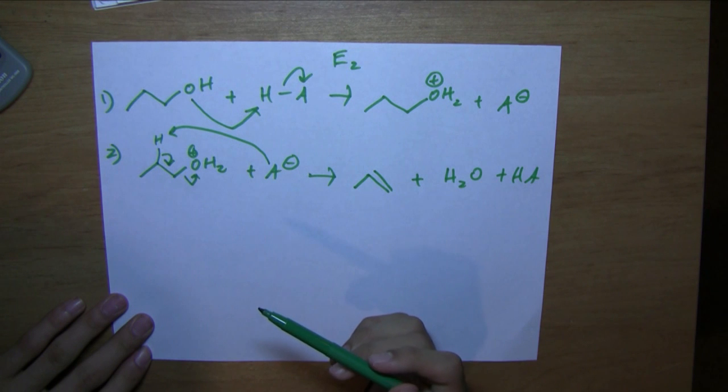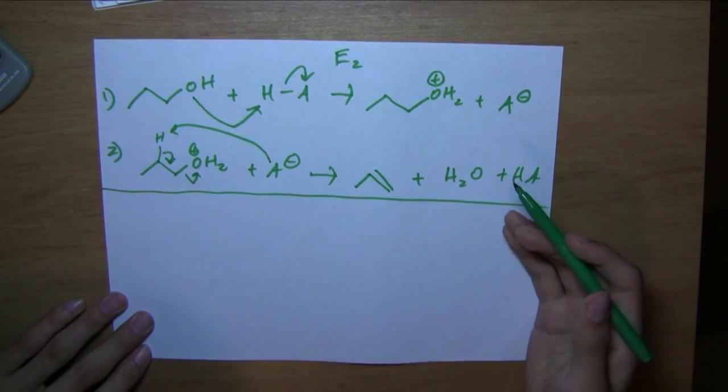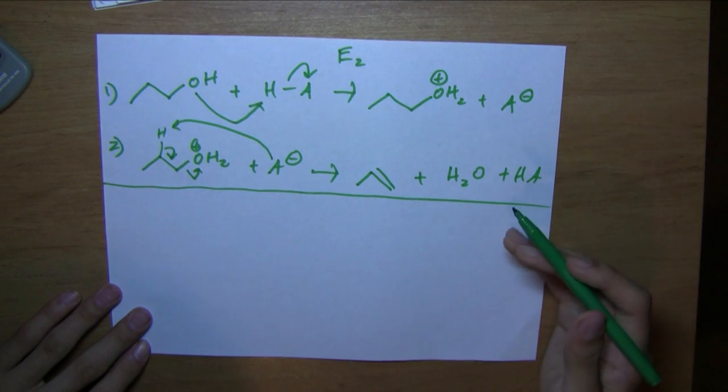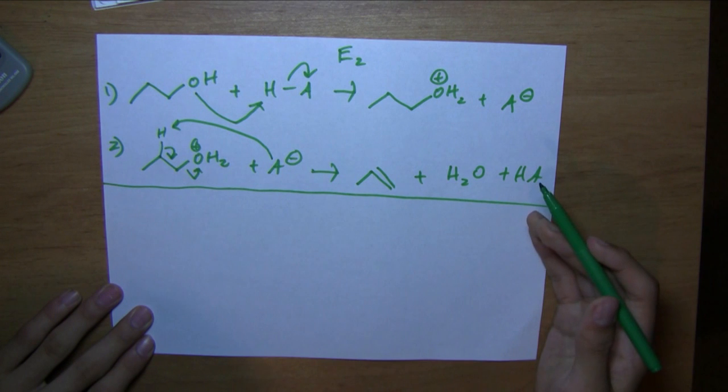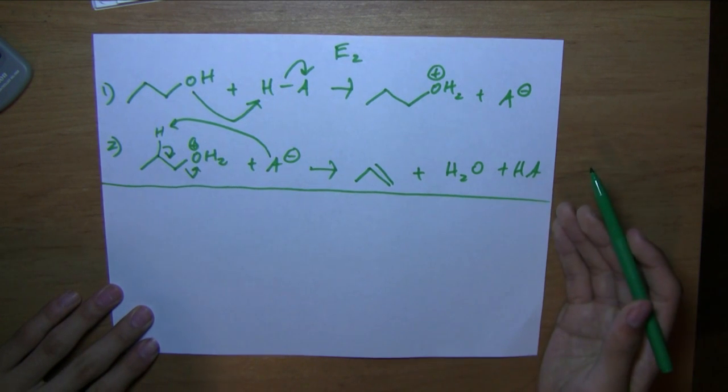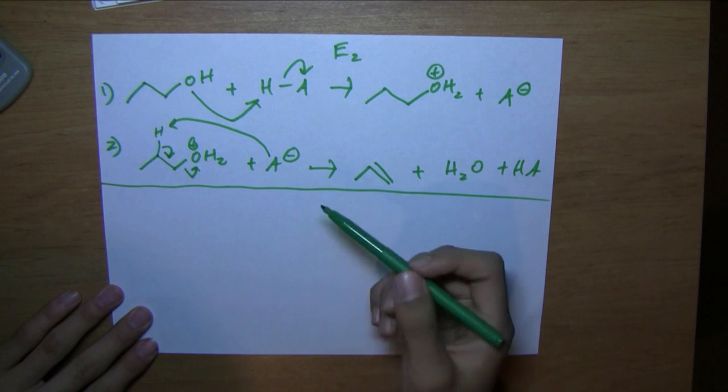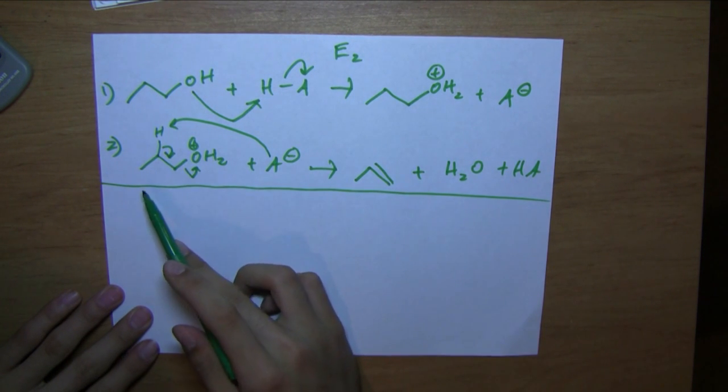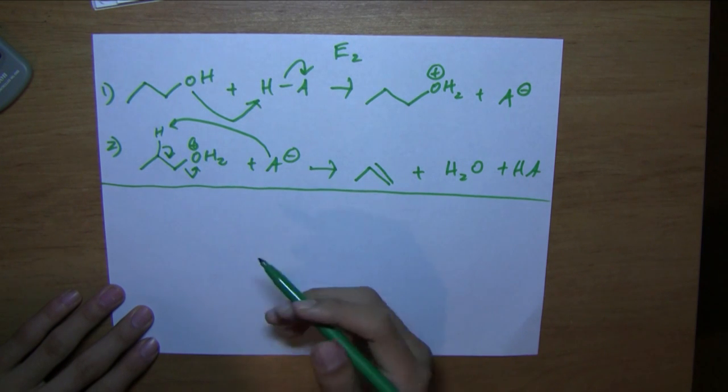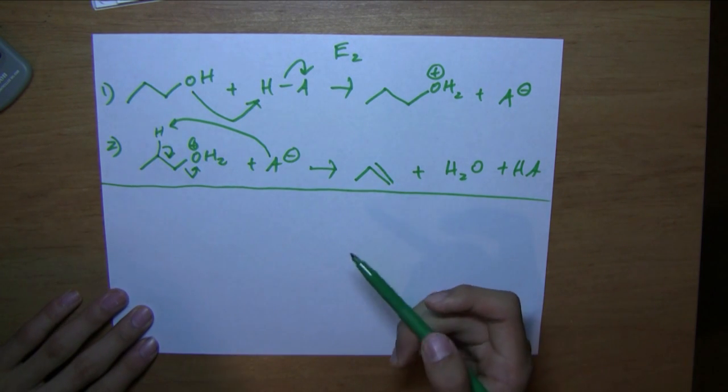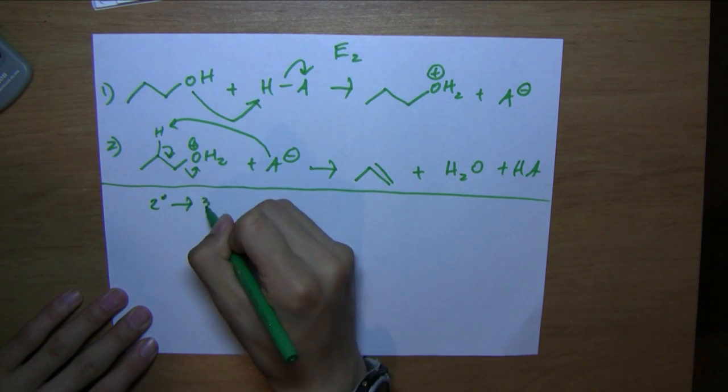Now, there's such thing as a rearrangement. And rearrangement happens whenever a carbocation is formed. Basically, rearrangement is where shifts happen in the molecule. A rearrangement in a primary doesn't really work, because there's only two steps, and it all happens too quickly for a rearrangement. So rearrangement in dehydration of alcohols only occurs from secondary to tertiary reactions.